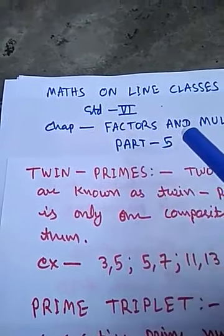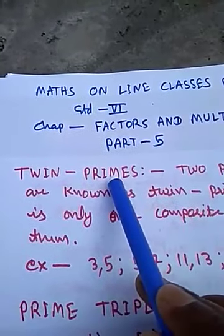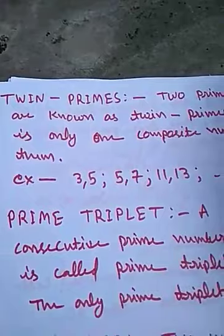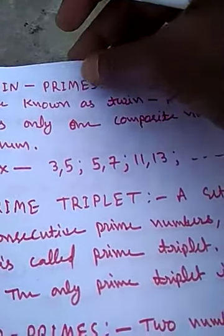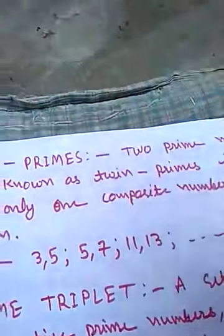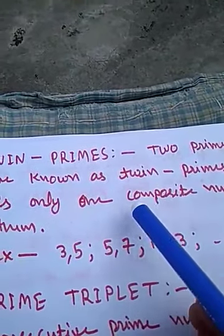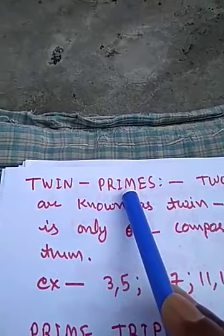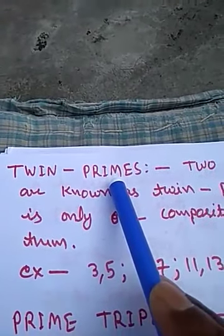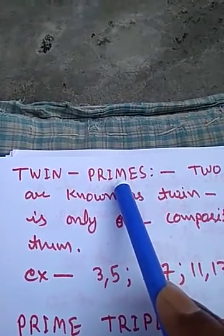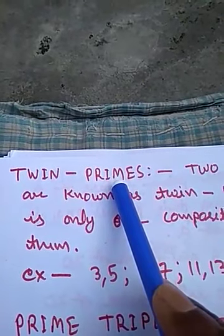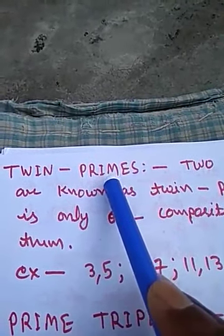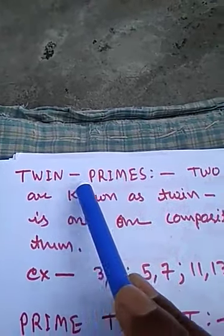Here we shall discuss about twin primes. If two prime numbers have only one composite number between them, that is called twin primes. Twin primes means two prime numbers where there is only one composite number between them.